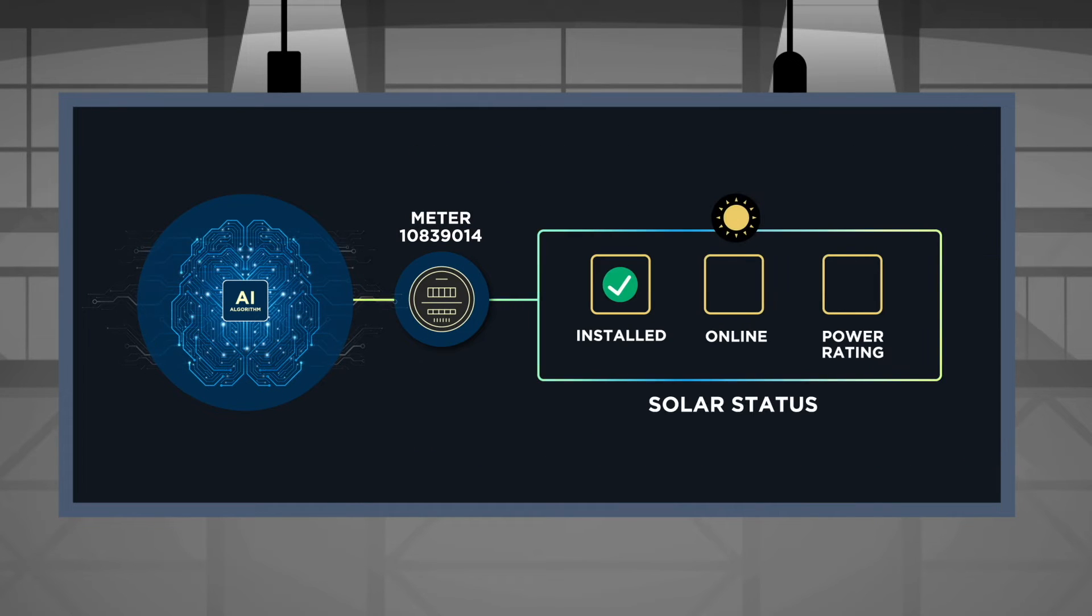It can also auto-detect solar status, including installed, online, offline, and its nameplate or power production rating, based on the measurements from the grid.